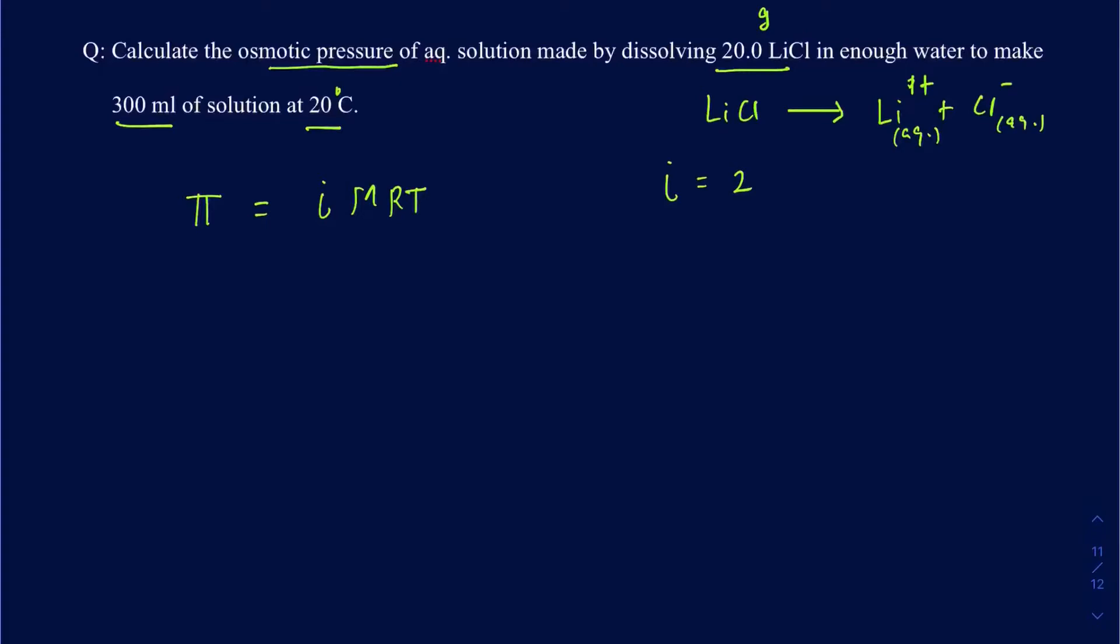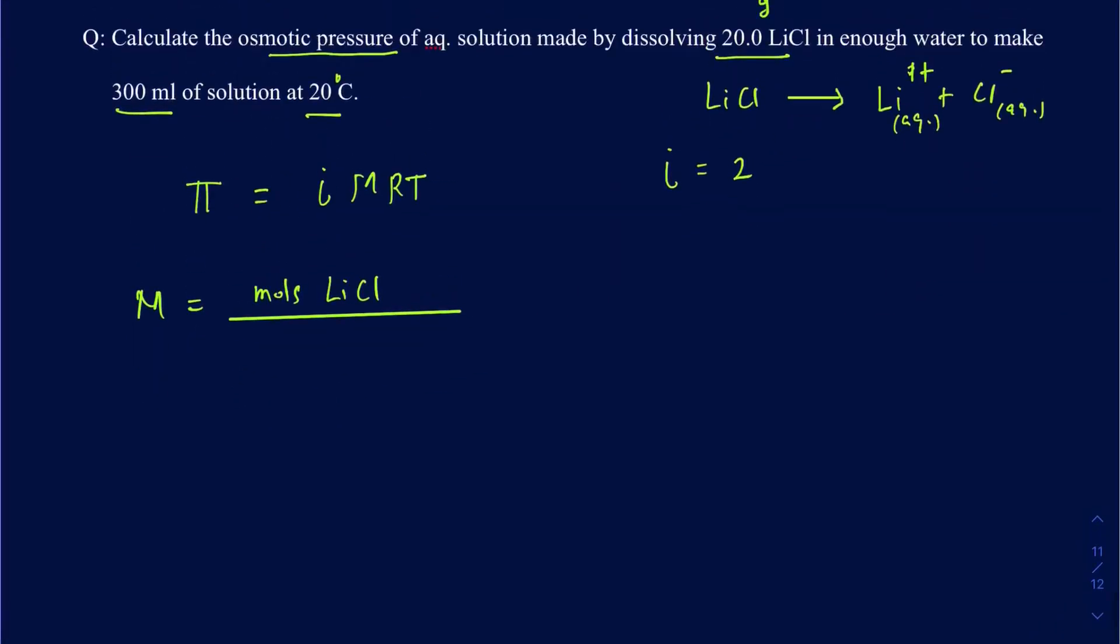And then we've got to figure out what's going to be the molarity. To find the molarity, I would need the moles of LiCl because remember, your molarity is going to be the moles of LiCl divided by liters of solution or volume of the solution. Well, we know the volume of the solution. We need to figure out what the moles are going to be for LiCl.